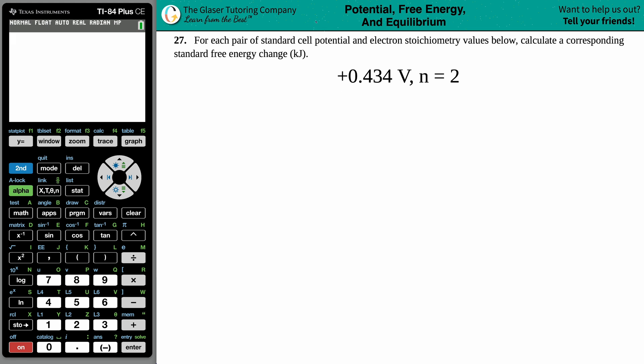Number 27: For each pair of standard cell potential and electron stoichiometry values below, calculate a corresponding standard free energy change in kilojoules. All right, so we have two values here. One is going to be the standard cell potential, and the other one is going to be the electron stoichiometry value.